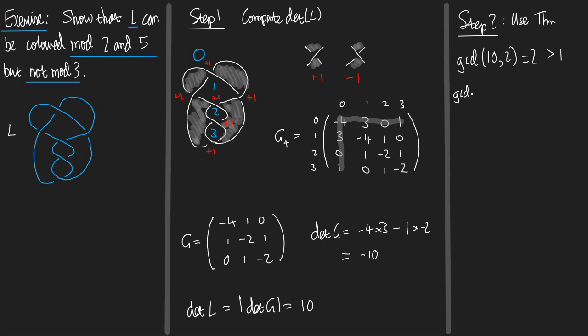Similarly, the GCD of 10 and 5, that's 5, which is bigger than 1. But the GCD of 10 and 3, well, 10 and 3 have no common factors, so it's 1.